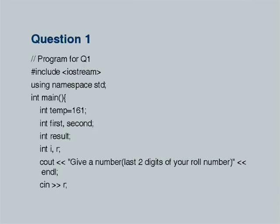The first question was very simple. It was to test whether you can follow the instructions of an algorithm and execute them correctly. Temp is an artificial variable; the value 161 has absolutely no bearing on the algorithm as we shall see. It defines first and second, defines integers i and r, and asks you to give a number which is the last two digits of your roll number — merely to ensure that everybody executes the algorithm with a different input.